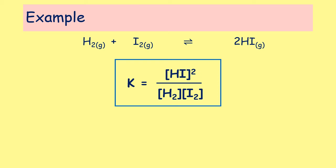If you were doing this in an exam you would be given information relating to those concentrations. It's really important to remember that those are the concentrations once the reaction has reached equilibrium — they are not the concentrations you start with, because obviously the product has a concentration of zero at the start. So these are the concentrations at the point equilibrium is reached, and you would need to be provided with those values to calculate K.